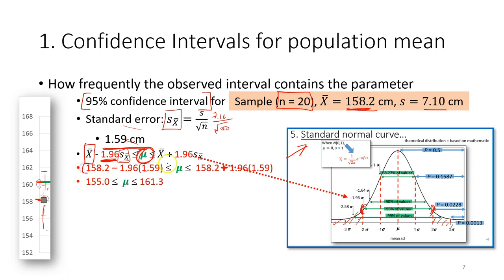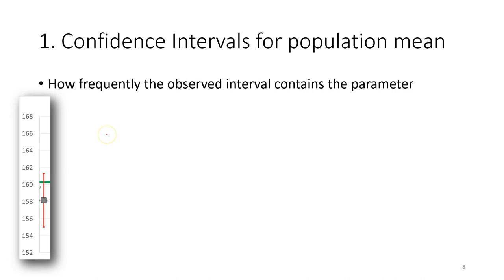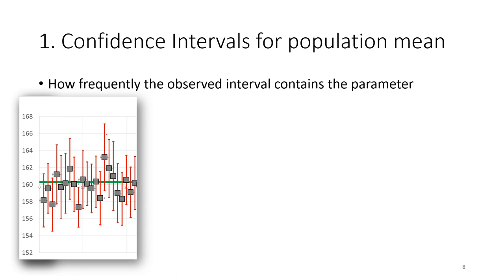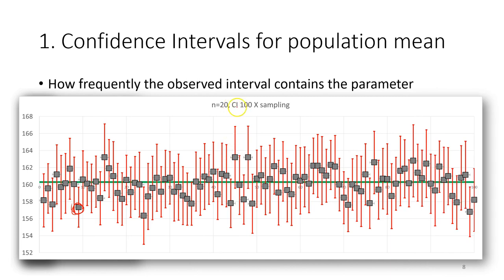We solve the calculations on each side to get the values, then plot the interval. The confidence interval helps us determine how frequently the observed interval contains the parameter. Imagine we have 20 samples — this is how it looks. As you can see, some of the sample intervals do not contain the population mean — they are outside the confidence interval — but in most cases they are within the confidence interval.